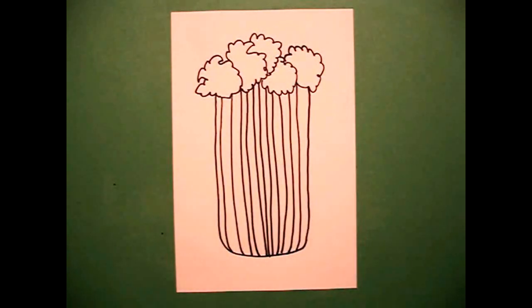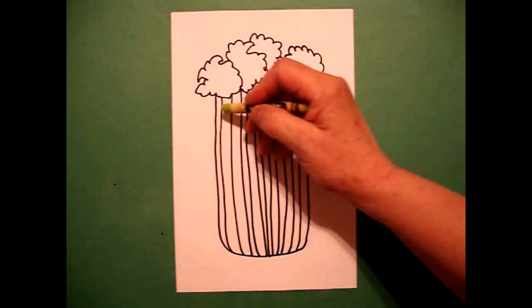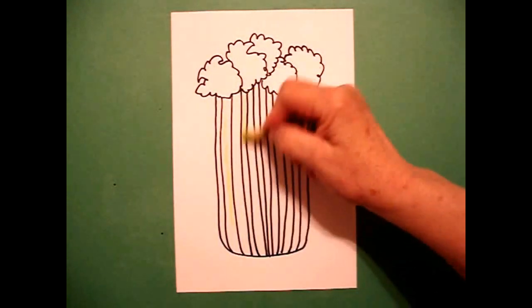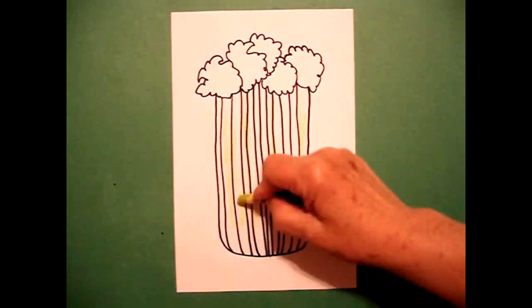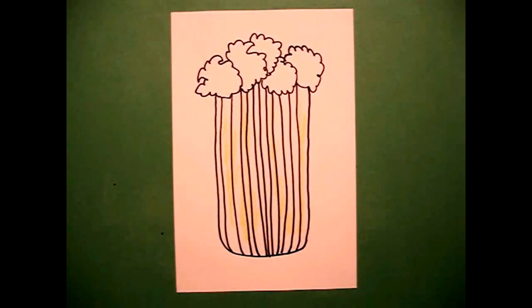And we're ready to color. I was lucky because I found three different shades of green to use on my celery. We always work light to dark, so I'm starting first with the yellow green.